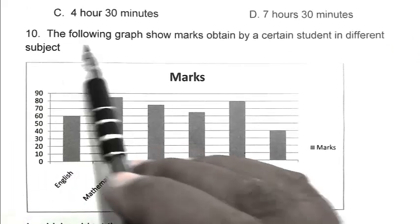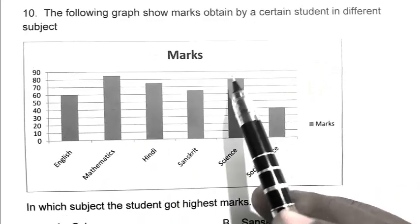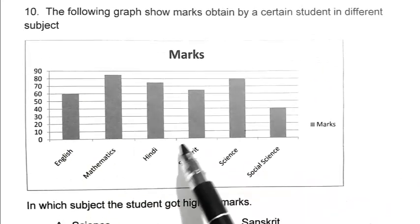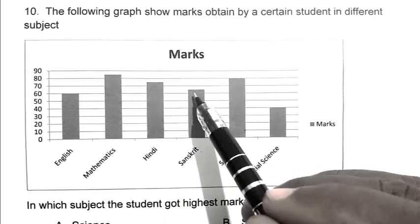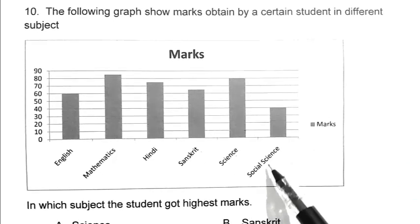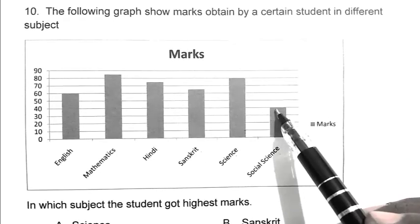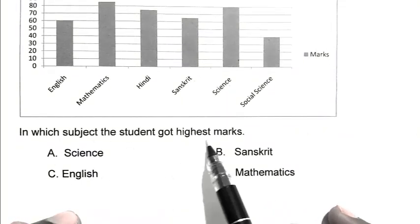Question number 10. The following graph shows marks obtained by certain students in different subjects. English 60, Mathematics 85, Hindi 75, Sanskrit 65, Science 80, and Social Science 40. The question is, in which subject the student got highest marks?